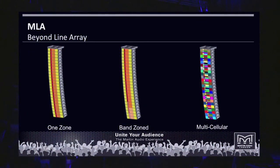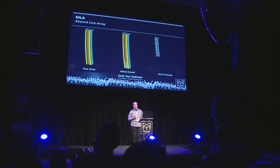And so here we have the multicellular array that we pioneered with the MLA system, where each acoustic cell has got its own amplifier and DSP channel. There's loads of fine granularity there, but how on earth are we going to configure all those DSP channels to do something useful for us?